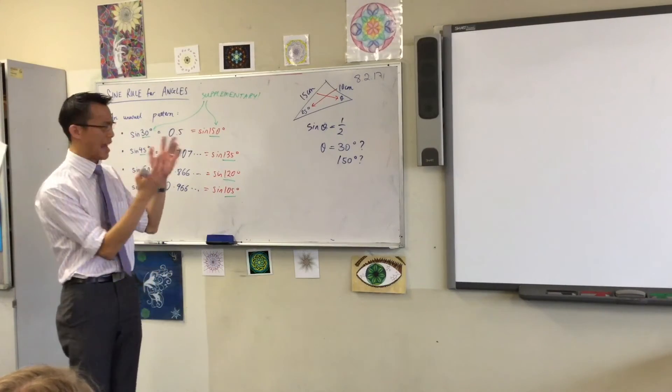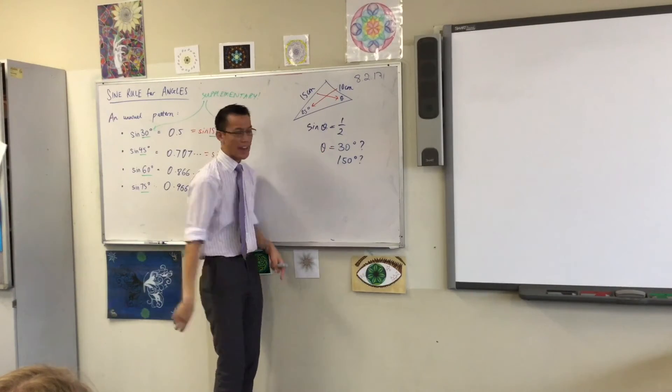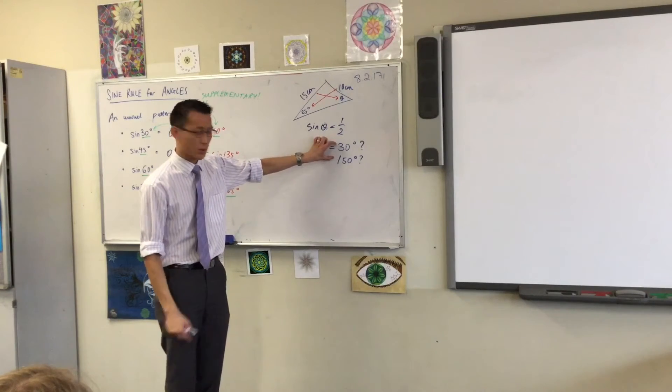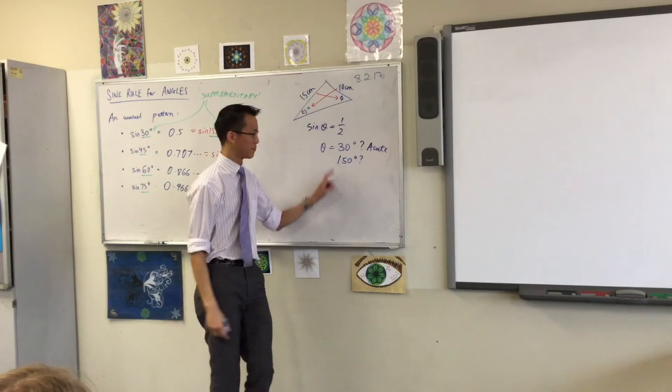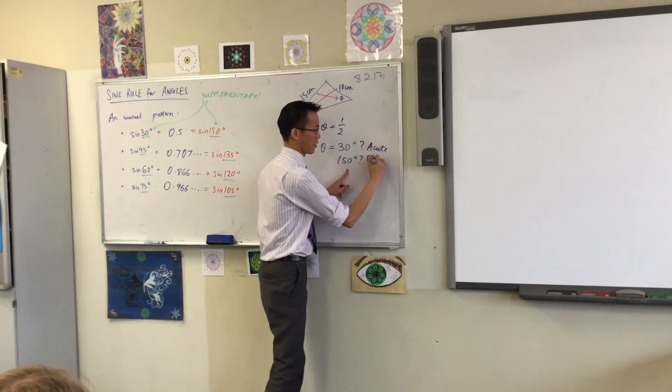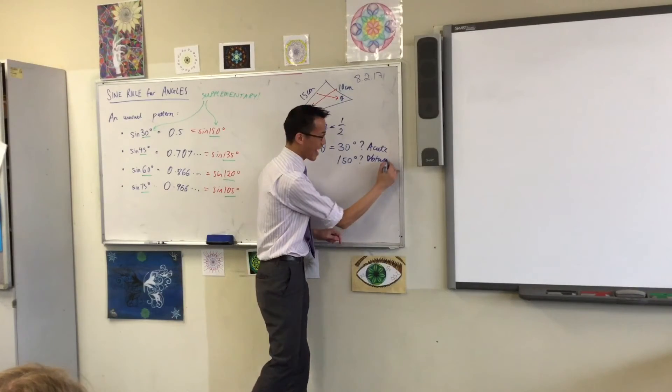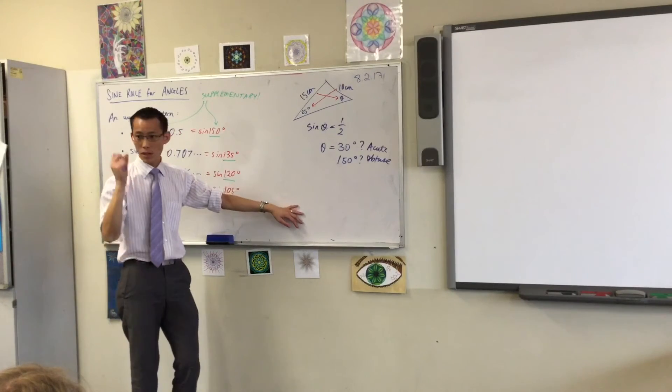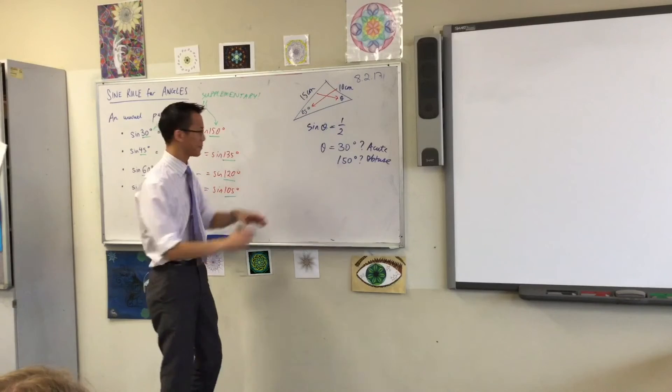There's another angle—in fact there's an infinite number of angles—that if you do sine of that angle, you'll still get back that. So, in fact, 30 degrees could be the answer. But 150 degrees could also be the answer. Now, what we call this is the ambiguous case. It's ambiguous as to which one it is. The difference between each of these angles is this one is acute. This one is not acute, it's obtuse—it's bigger than the right angle. Which means you can tell them.